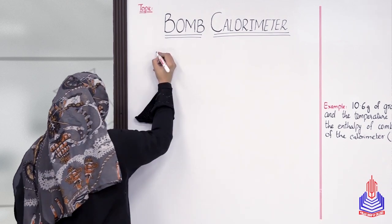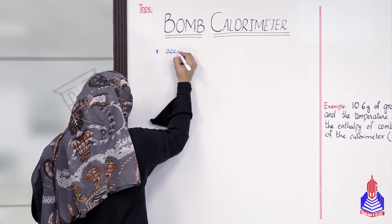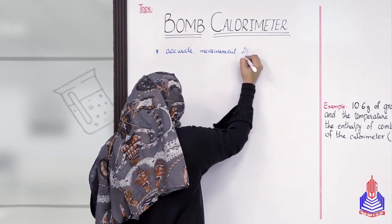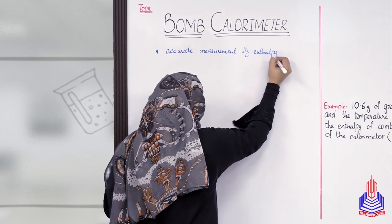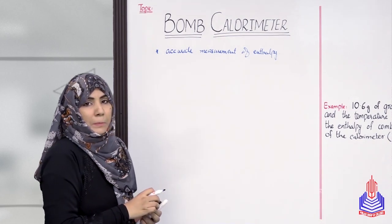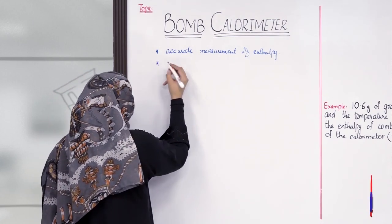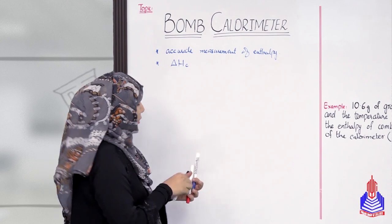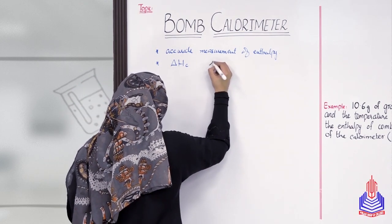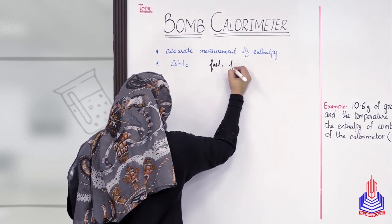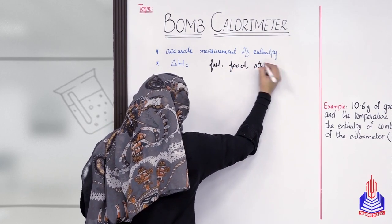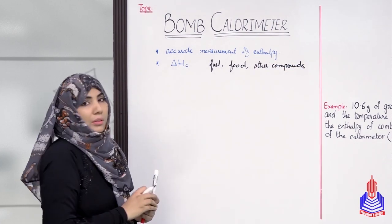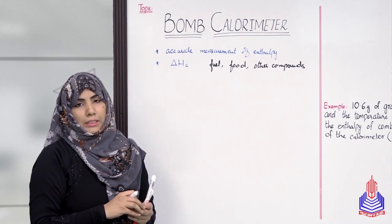Bomb calorimeter जो है, हम accurate measurement of enthalpy के लिए इस्तेमाल करते हैं। ये glass calorimeter से बहुत ज़्यादा accurate values देता है। Next point - that is used to measure the enthalpy of combustion of any fuel, food materials, and other compounds. Food materials और other compounds में liquids भी हो सकते हैं - उनकी combustion के enthalpy को measure करने के लिए हम bomb calorimeter को use करते हैं।